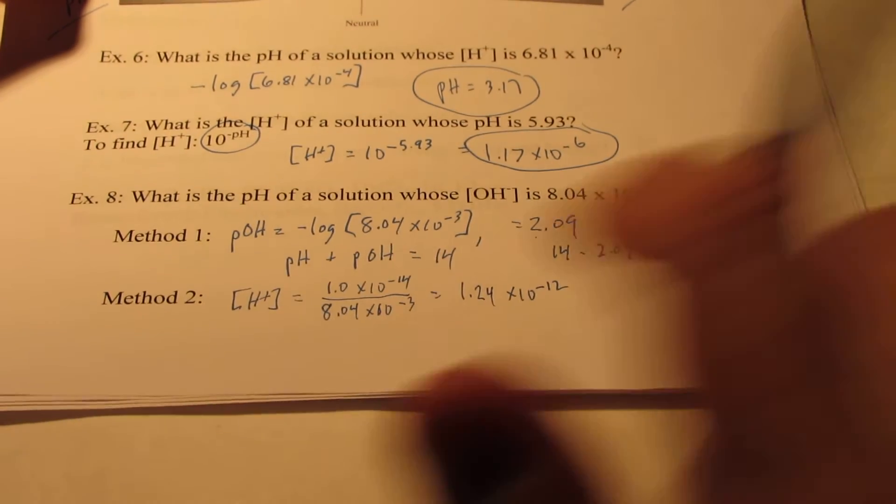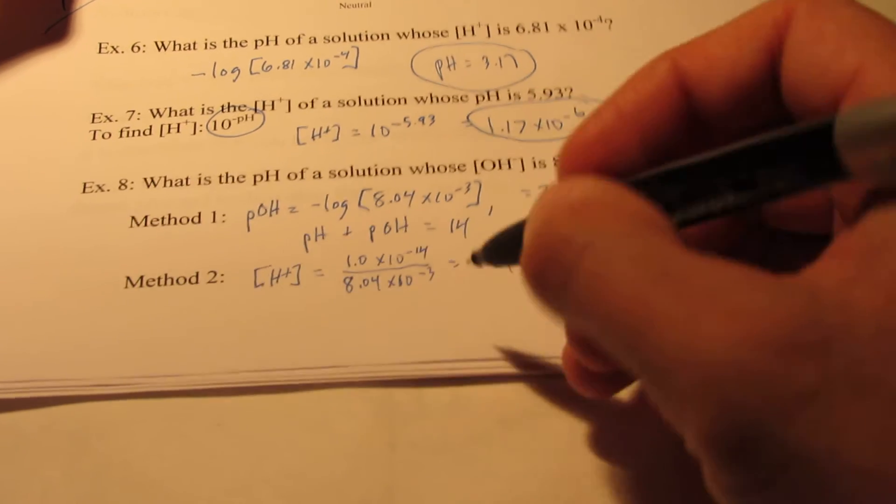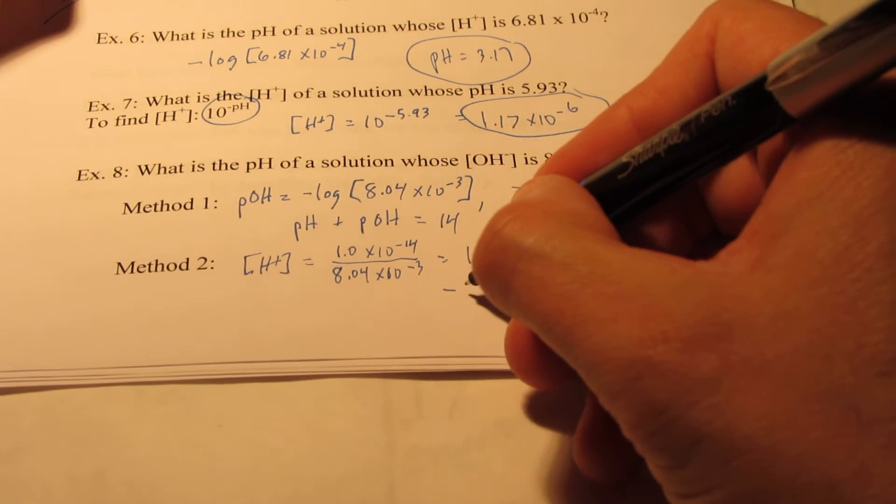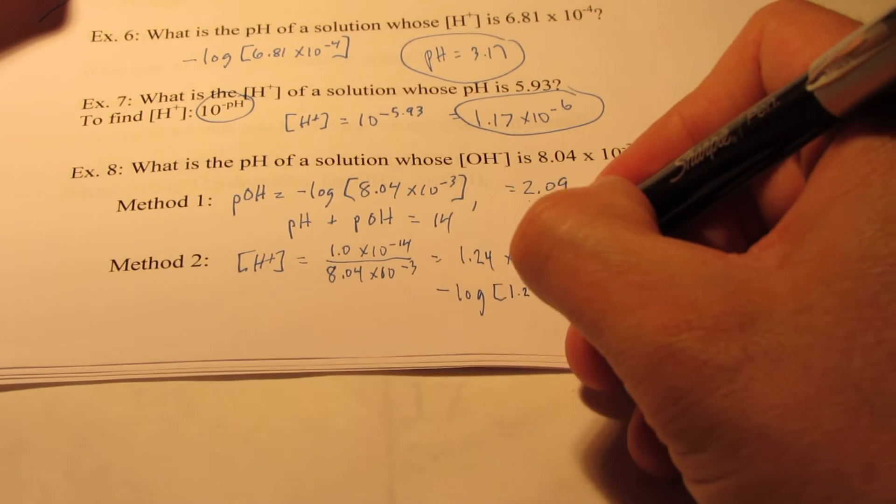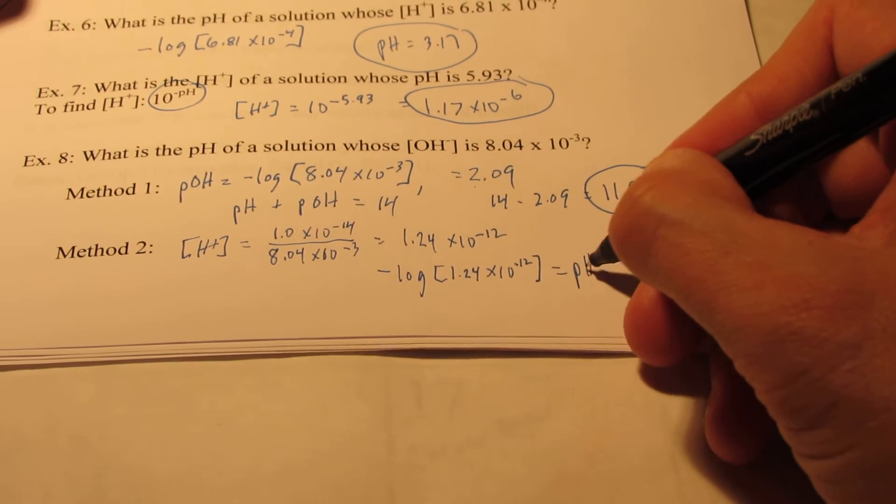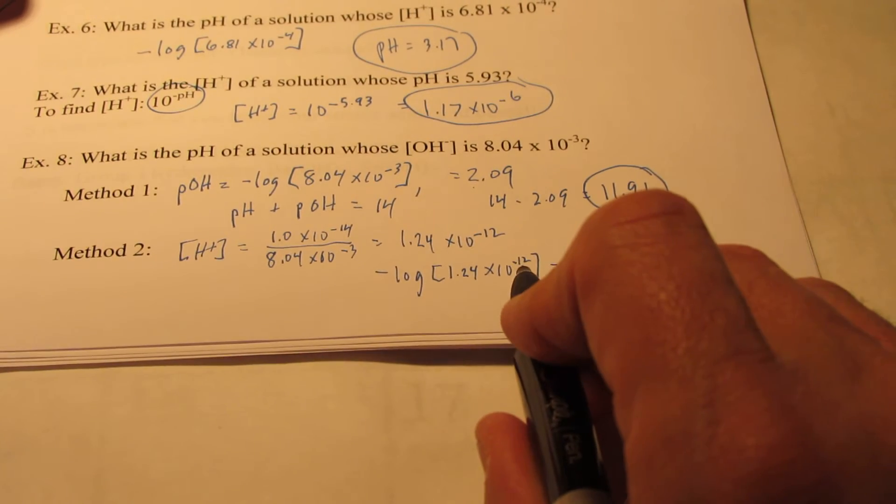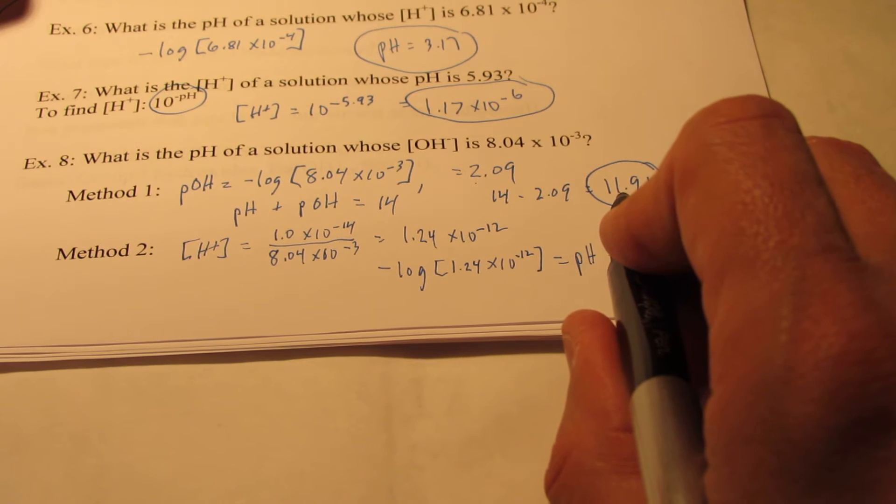Now that's the hydronium ion concentration, but if I want the pH, I'd take the negative log of that number. So the negative log of 1.24 times 10 to the negative 12th should give me the pH. Now by the way, won't that be between 11 and 12? Notice that's what our answer was earlier.